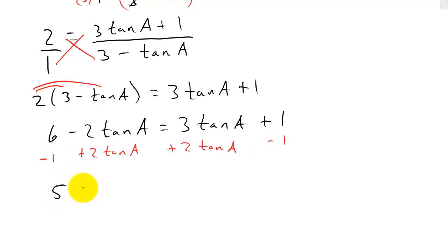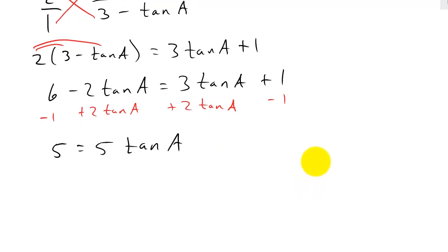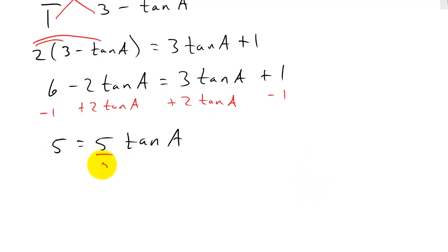So that's going to give me 5 equals 5 tangent A. And then I'll divide both sides by 5, and so that's going to give me tangent A is equal to 1. And so that's my answer.